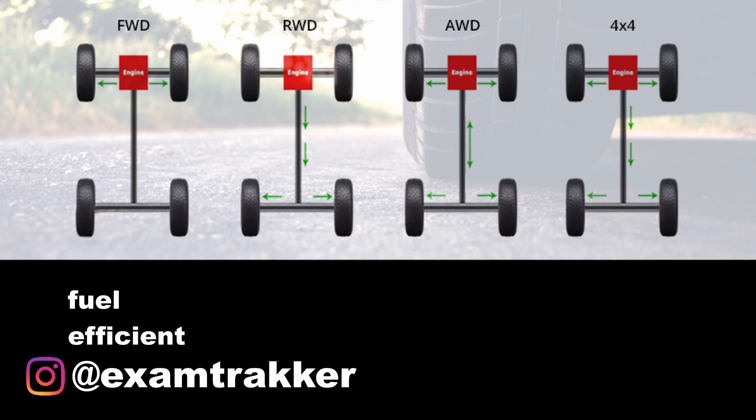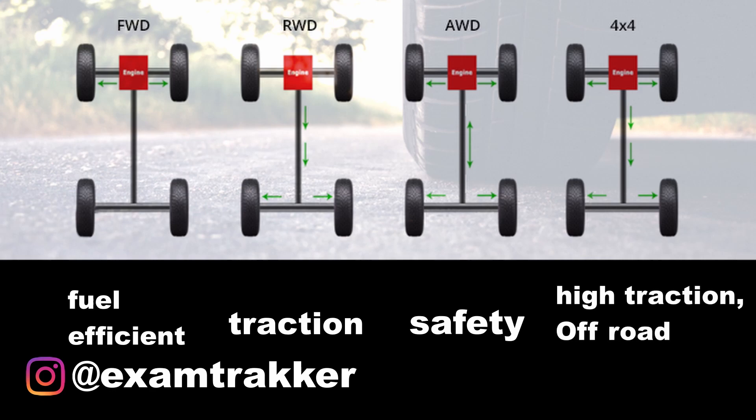In conclusion: front wheel drives are purely for efficiency — they don't create much traction. Rear wheel drives can create some traction but they're not safe because they tend to slip a lot and they're not fuel efficient either. All wheel drive cars are designed for safety — they don't slip away when roads are slippery. Four wheel drives are clearly designed for off-roading, but when it comes to fuel efficiency, they are really bad.